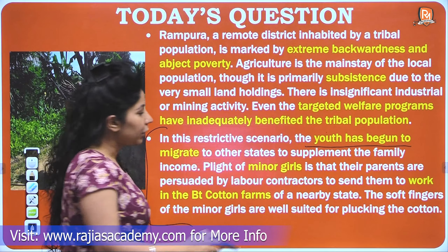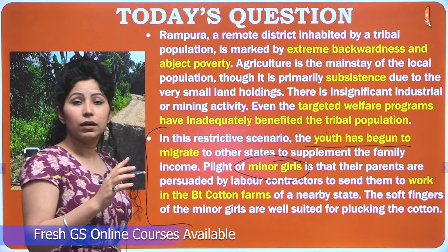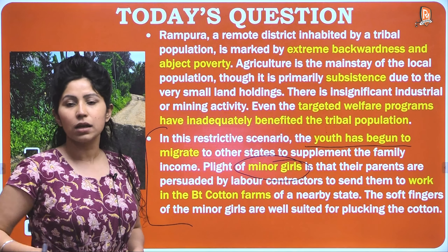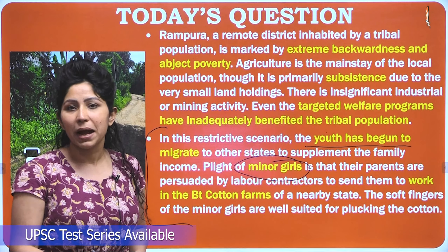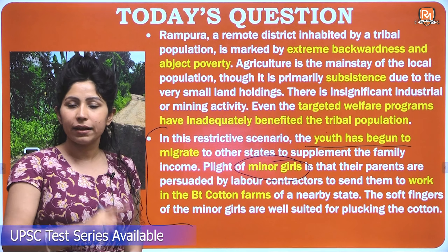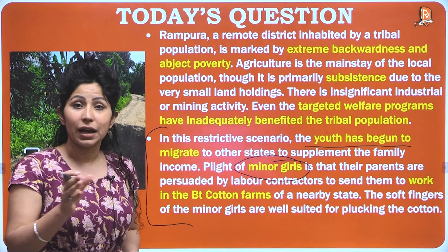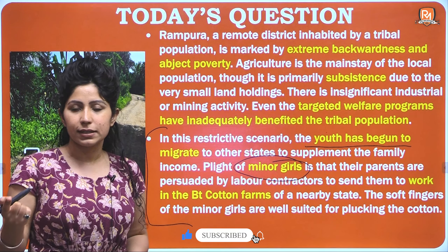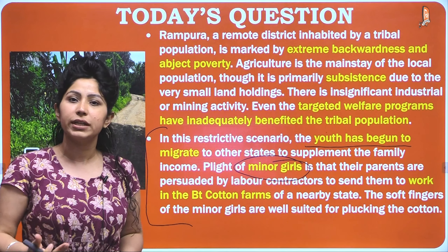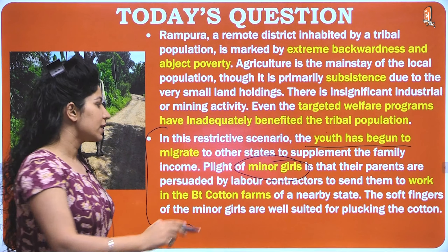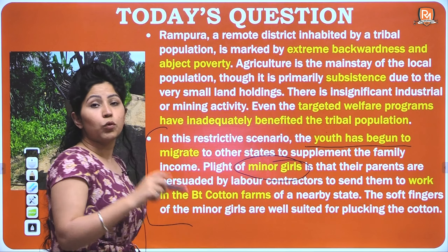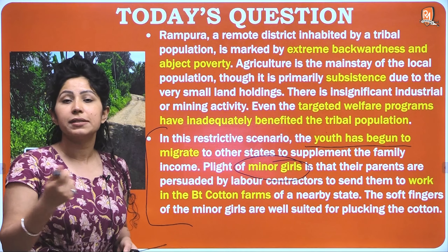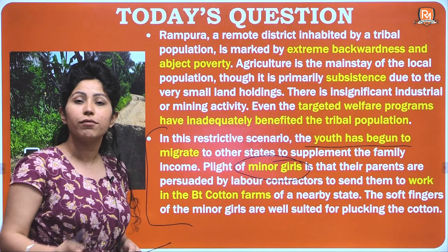The plight of minor girls is another problem — because their fingers are soft, labor contractors from BT cotton farms are employing these minor girls under 18 years of age. Parents send their daughters because they need money, they are poor and vulnerable. Whatever acts you know about child labor, mention them and come up with solutions to tackle the issue of child labor here.